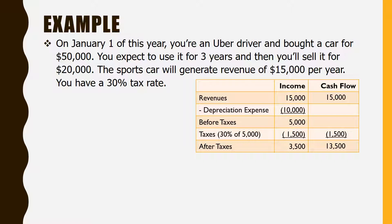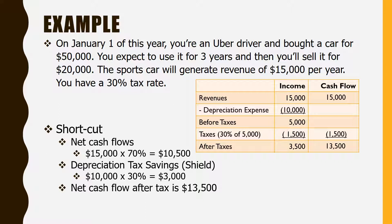Rather than working through the full tax return and cash flows, the shortcut is: net cash flows equal $15,000 times one minus the tax rate, which is 70%, meaning we keep $10,500 of that. But we also get tax savings from depreciation — $10,000 in depreciation times 30% gives $3,000 in tax savings. So the net cash flow ends up being the same $13,500.